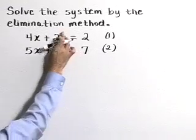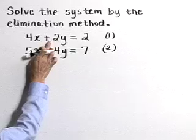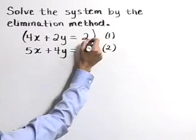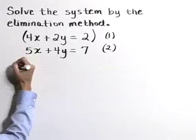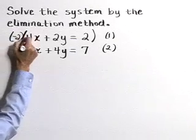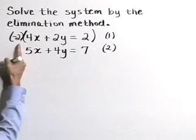If we want to get the y variable to cancel, we can turn this positive 2 in equation 1 into a negative 4 if we multiply equation 1 through by the number negative 2. So let's do that.